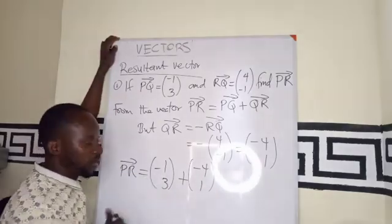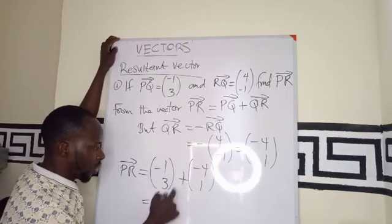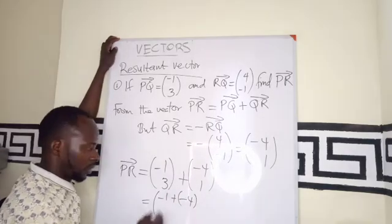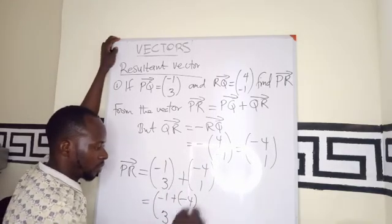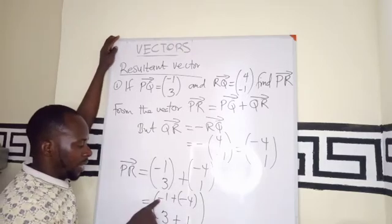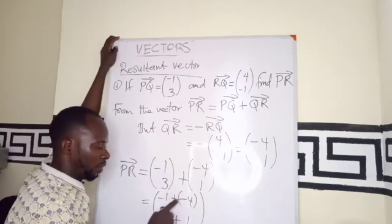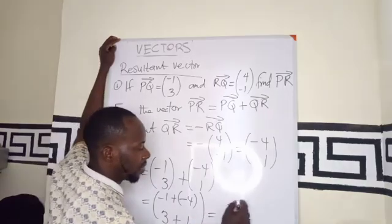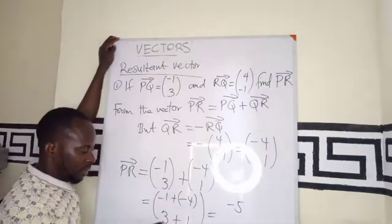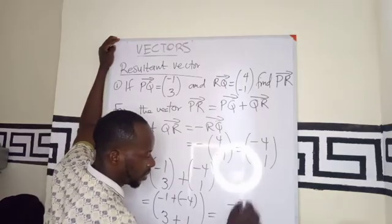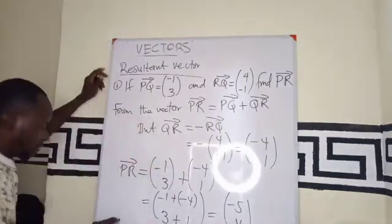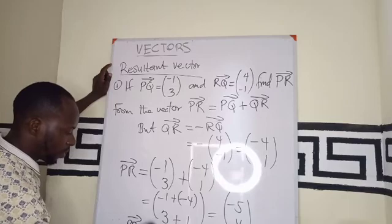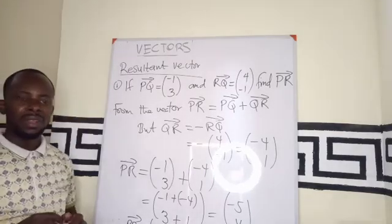We compute them by putting them in one bracket. Minus 1 plus minus 4, then we have 3 plus 1. Minus 1 plus minus 4 can be taken as minus 1 minus 4, and minus 1 minus 4 is minus 5. Then 3 plus 1 will give us 4. So with a vector, therefore, vector PR is going to be minus 5, 4 as our final answer.